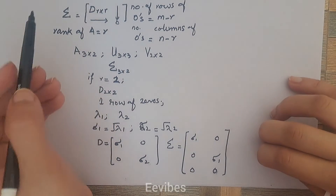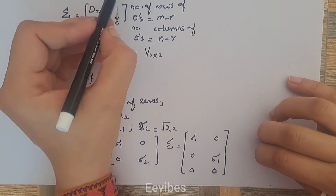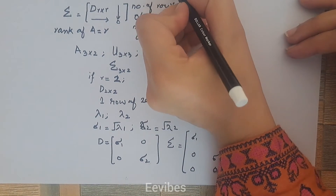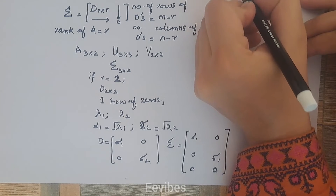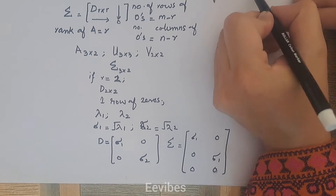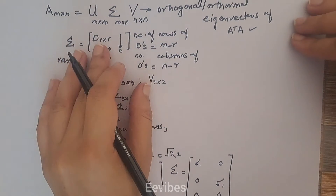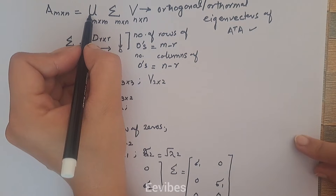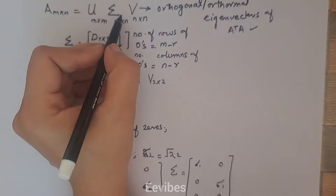This is the main thing to remember when performing singular value decomposition. Another important point is that matrix V consists of the orthonormal eigenvectors of A^T·A. Similarly, matrix U forms the orthogonal basis of A^T·A, while the Σ matrix consists only of the singular values of A^T·A.